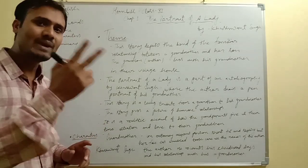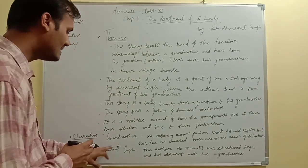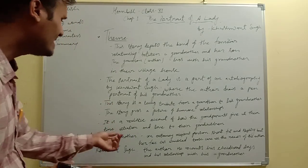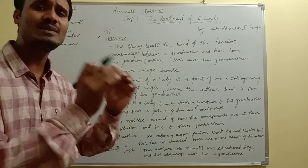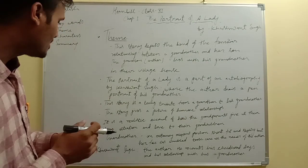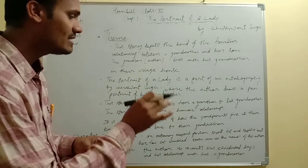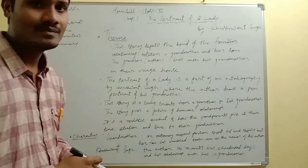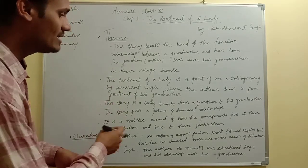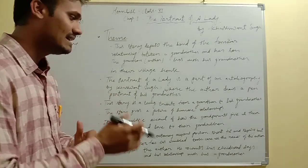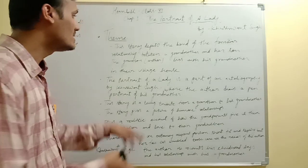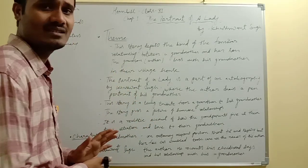Now let's discuss the characters of this chapter. There are two main characters. The first is grandmother and the second is Khushwant Singh, the author. The grandmother is an extremely religious lady, very kind, very supportive, very religious. She looks fat, short and slightly bent, which tells about her age. Khushwant Singh, the author, recounts his childhood days and his relationship with his grandmother.